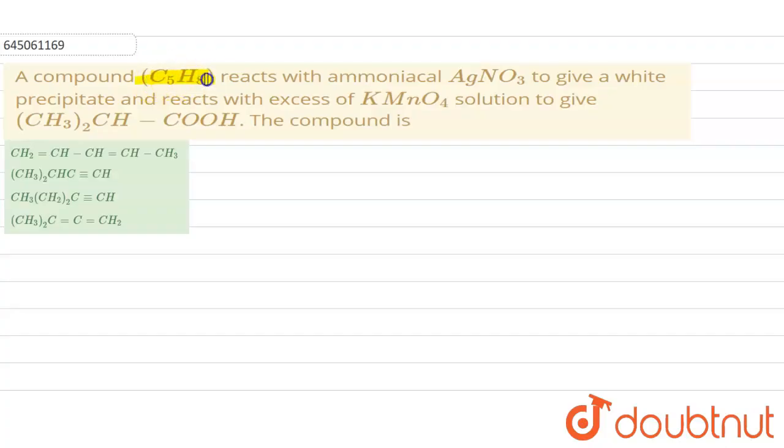a compound C5H8 is given which reacts with ammoniacal silver nitrate to give a white precipitate and reacts with excess of KMnO4. So we have to find out the compound.